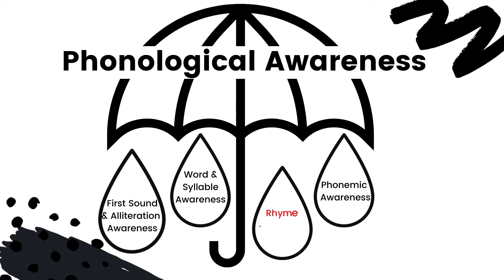The next raindrop is word and syllable awareness. Word awareness just means that if I say a sentence, the student can tell me how many words are in that sentence — understanding that words are separate entities. For example, 'I like to play' contains four words. Syllable awareness is knowing that words are made of parts called syllables. If I give the word 'table,' the student should be able to tell me that 'table' has two syllables.